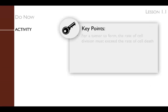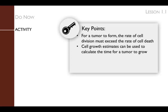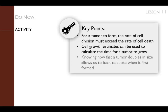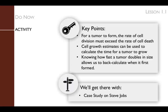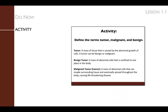The key points of the activity are: first, for a tumor to form, the rate of cell division must exceed the rate of cell death. Cell growth estimates can be used to calculate the time for a tumor to grow, and knowing how fast a tumor doubles in size allows us to back-calculate when it first formed. We'll explore this by reviewing a case study on Steve Jobs. First, we review the vocabulary: a tumor is a mass of cells increasing in size because its rate of growth is faster than its rate of death. However, not all tumors grow at the same rate.